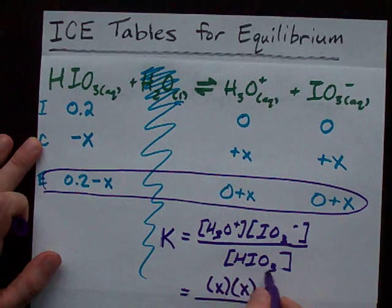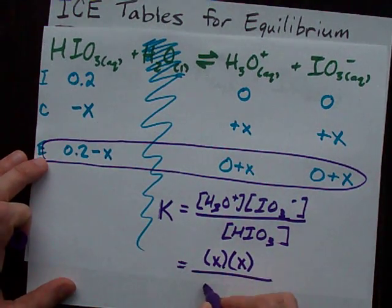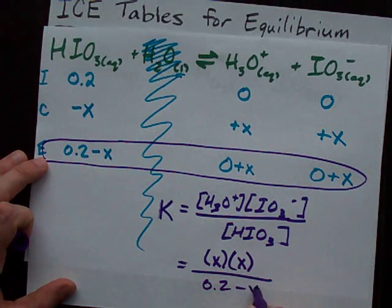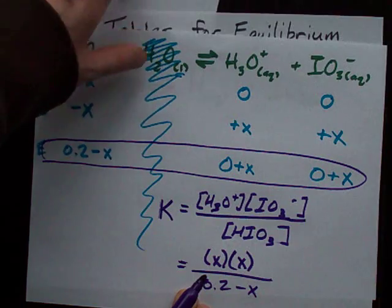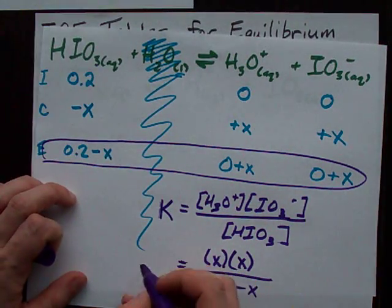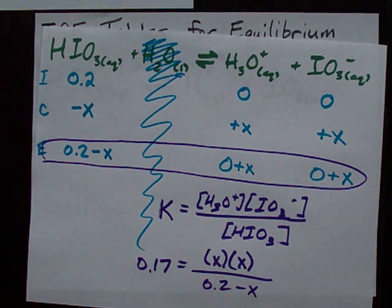And your iodic acid concentration is 0.2 minus X. Now, they gave us K in the equation. It was 0.17. So we fill that in for K, and it's your job to solve this equation.